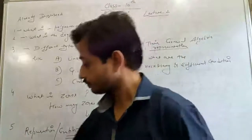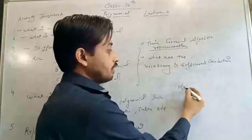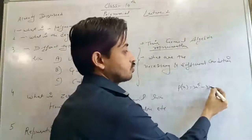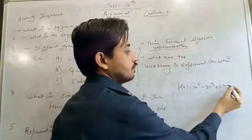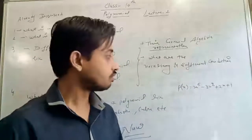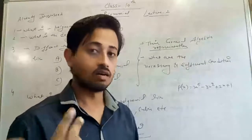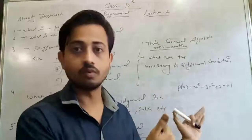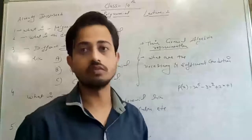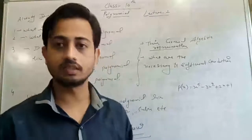For example, if I take a polynomial p(x) = x⁵ − 3x² + 2x + 1, the highest power of x is 5. So the number of zeros we get from this polynomial is 5, because the highest power of the variable is 5.